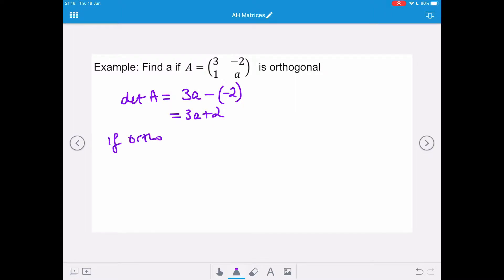Now, if it's orthogonal, then matrix A has the property that the determinant of A has to be plus or minus 1. So that means we've got 3a plus 2 equals positive 1. And if we take away 2 from both sides and divide by 3, then a will be negative 1/3.